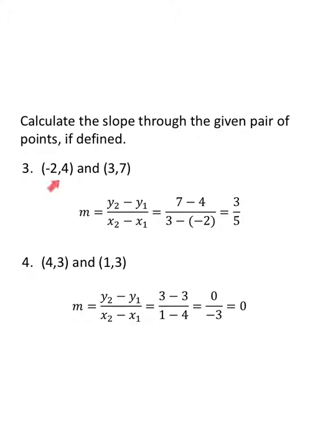For the points (-2, 4) and (3, 7): seven minus four over three minus negative two. Seven minus four is three. Three minus negative two — subtracting a negative means adding — so three plus two is five. My slope is three fifths. Leave it as a fraction; don't reach for a calculator. As long as your fraction is simplified, you're good — you don't need a decimal.